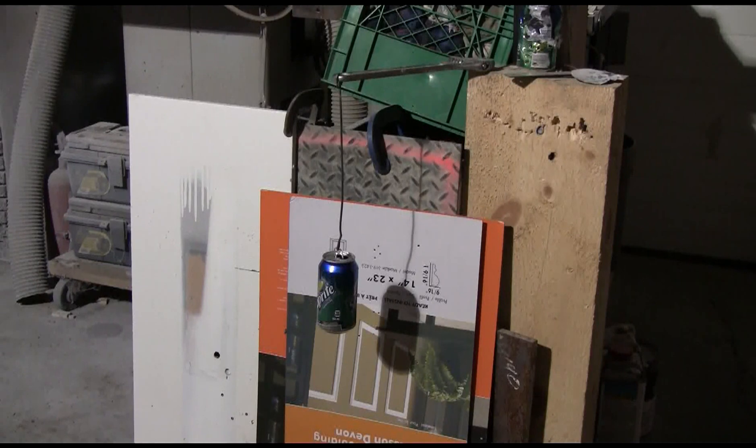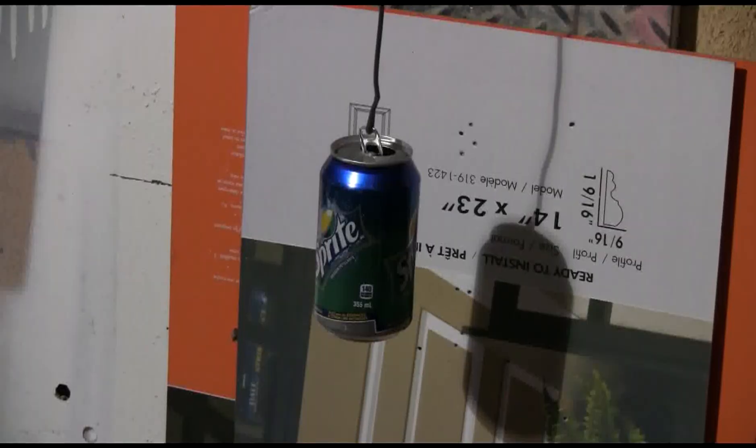I've rigged up a target here for the BB cannon. It's an empty sprite can hanging in front of my steel backstop with a little cardboard just to prevent BB ricochets. Well let's go shoot some BBs at this. I'll be firing at different pressures and the range is 10 meters.